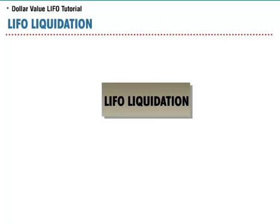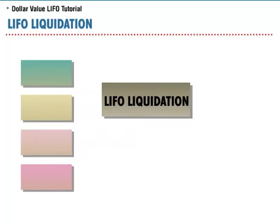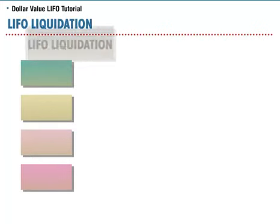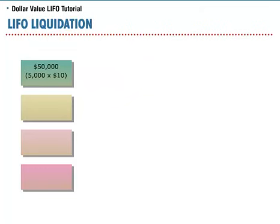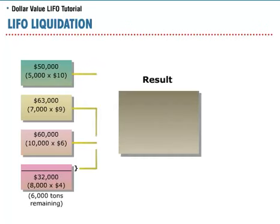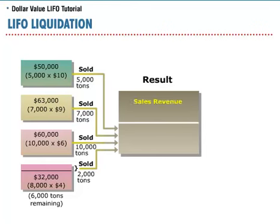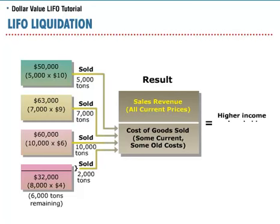The result of liquidating these layers is that lower costs from preceding periods are matched against sales revenues reported in current dollars. This situation leads to a distortion in net income and a substantial tax bill in the current period. For example, Labatt Company had sales in 2002 recorded in 2002 sales dollars; however, the cost of these sales was composed of some current costs and some old costs. As a result of matching current revenues with historic costs, Labatt will have a higher net income and probably a higher tax bill.